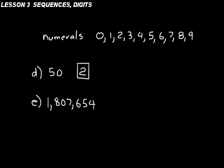In E, you have 7 digits. Just count up all of the numerals that are in that number. And that's your digits.